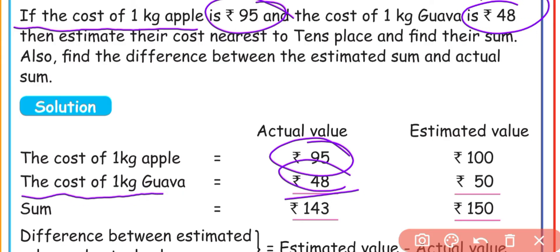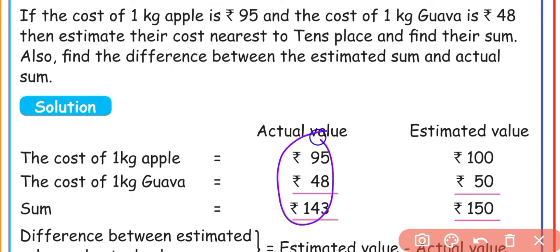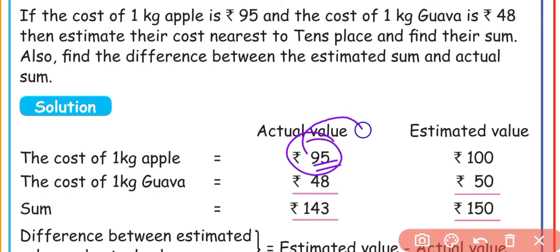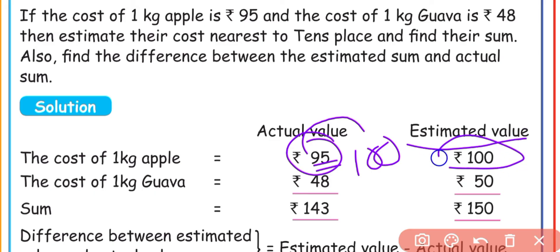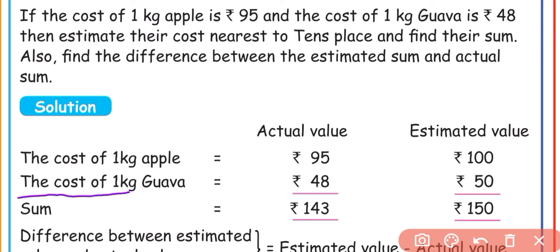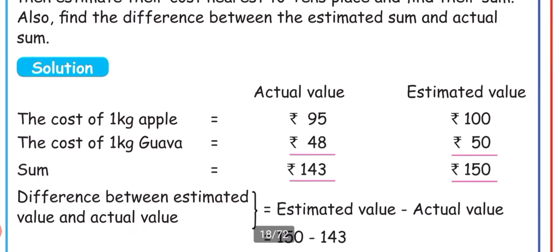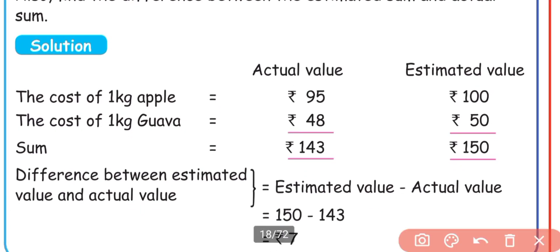The cost of apples is Rs. 95 — ones place is 5, which equals 5, so round up: 9 tens becomes 10 tens, estimated value is Rs. 100. The cost of guava is Rs. 48 — ones place is 8, greater than 5, so round up: 4 tens becomes 5 tens, estimated value is Rs. 50.